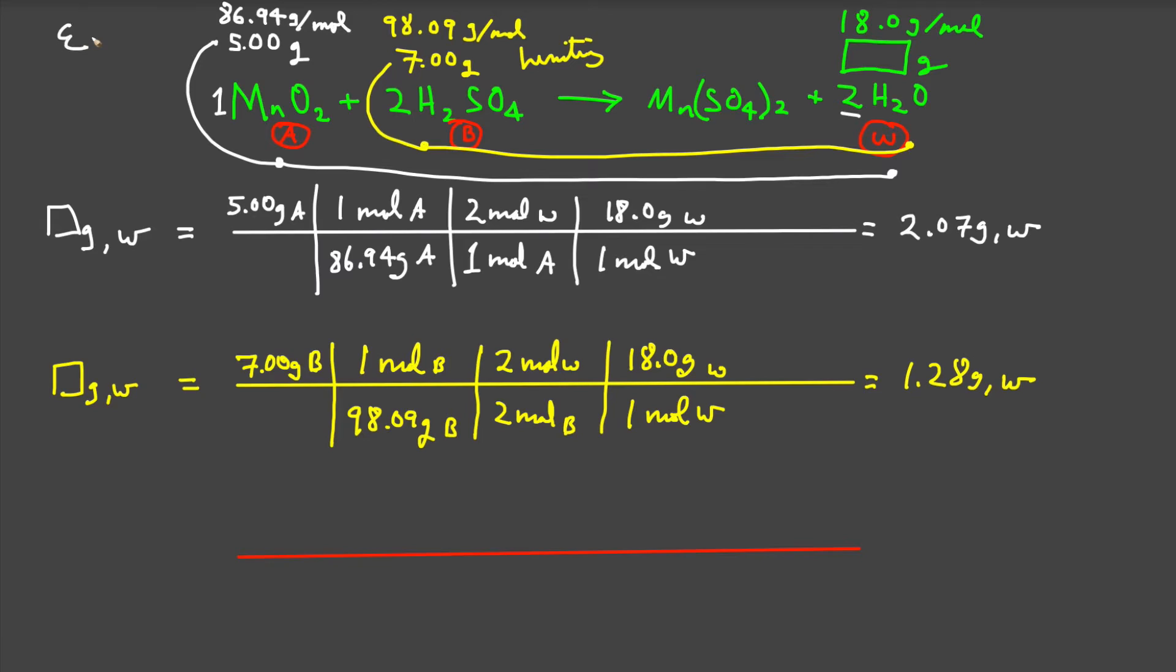We have now answered two of the questions. The limiting reagent is sulfuric acid. The material in excess is manganese dioxide. And the third question is, how much material is produced? That is 1.28 grams. Now for the third problem.